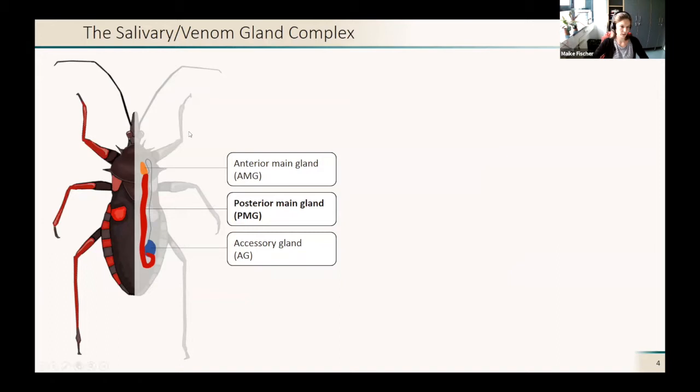When we look at the salivary or the venom gland complex, you can see it's pretty large and consists of three parts: the anterior main gland here, the orange part; the posterior main gland, which is this large red part; and an accessory gland.